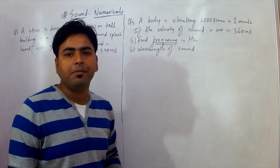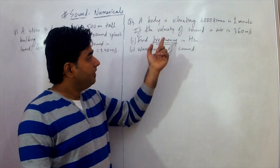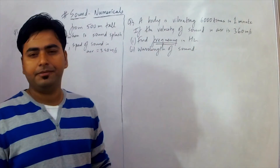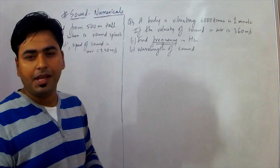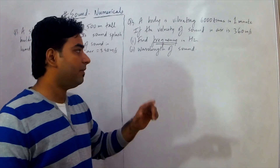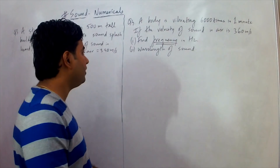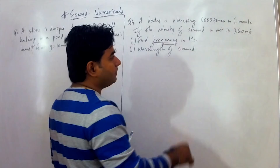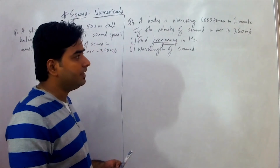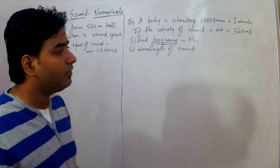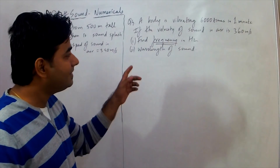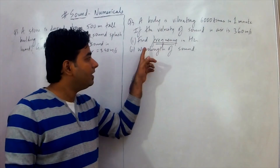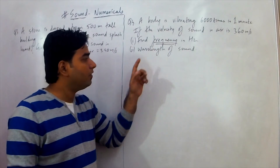A body is vibrating 6,000 times in a minute. The velocity of sound in air is 360 meters per second. We need to find the frequency and the wavelength.